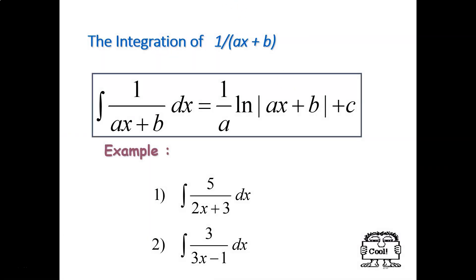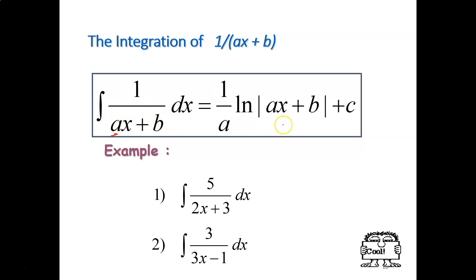Next, we're going to see the integration of 1 over (ax plus b). Previously it was just 1 over x. Now you have ax plus b. When you have integration of 1 over (ax plus b) dx, the answer will be (1/a) ln|ax plus b| plus c. Why 1 over a? Because we have a as the coefficient of x. The denominator (ax+b) is written back inside ln.